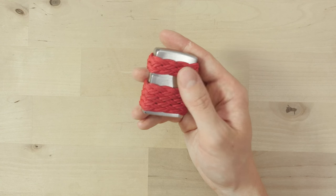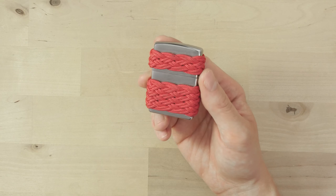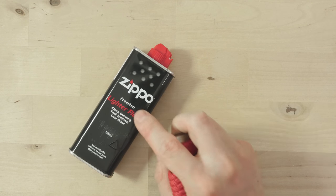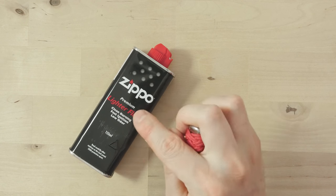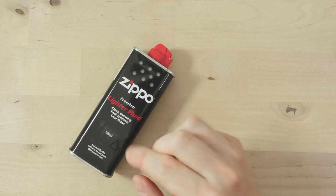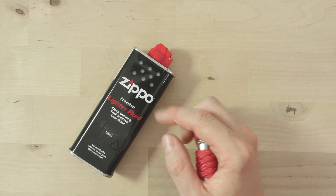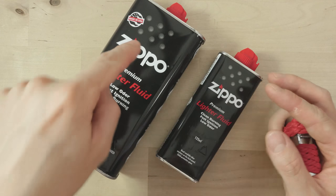Filling your Zippo lighter is the most basic way of maintaining it. For this task you're going to need some lighter fluid. You can use the original one from the Zippo company or an off-brand lighter fluid. An off-brand one is probably going to be cheaper. Another way of saving money on lighter fluid is to buy it in larger containers.